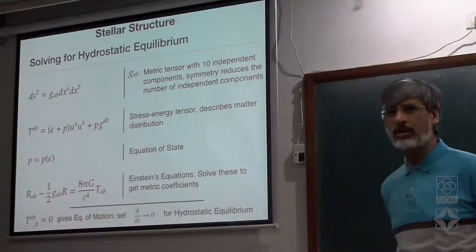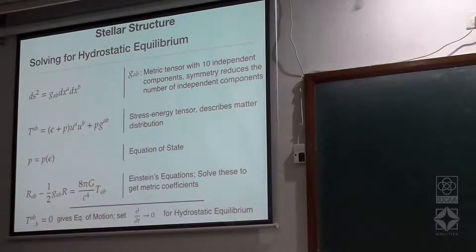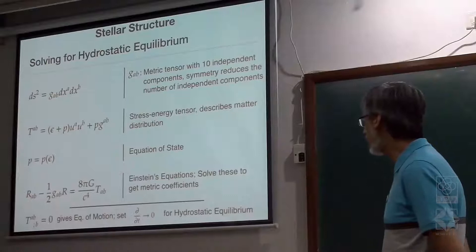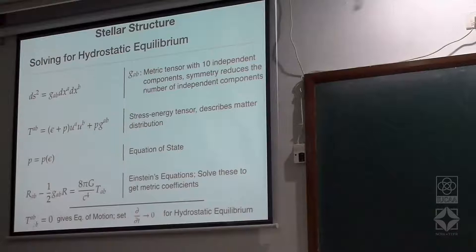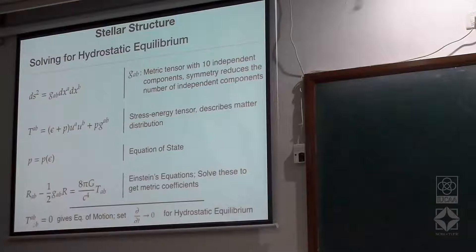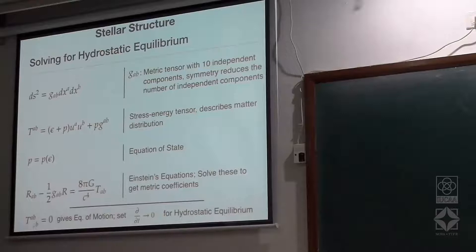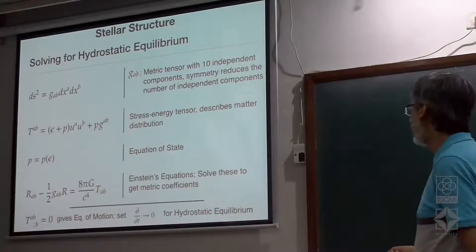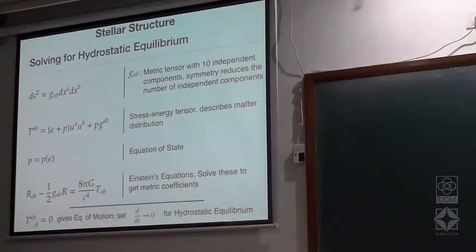Once you have the values of g_ab, you define the local covariant and contravariant derivatives, which involve the metric coefficients. You then use the condition that the covariant derivative of T_ab equals zero, which gives you the equilibrium solution — that is the equation of hydrostatic equilibrium. Hydrostatic equilibrium comes when we set the time derivative to zero. This is the route to get the equilibrium structure.